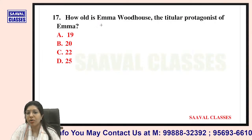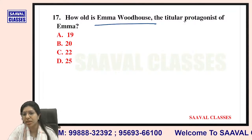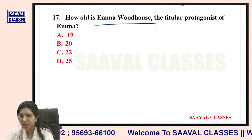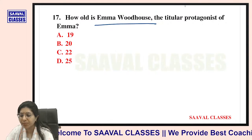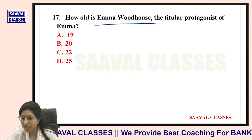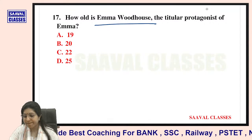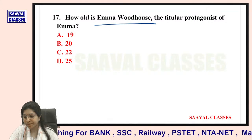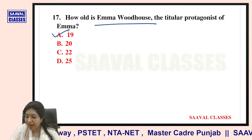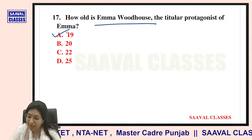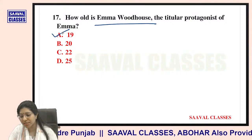Question number seventeen: How old is Emma Woodhouse, the titular protagonist of Emma? Options are nineteen, twenty, twenty-two, or twenty-five. She is nineteen years old — it is clearly mentioned. I am sure about it.